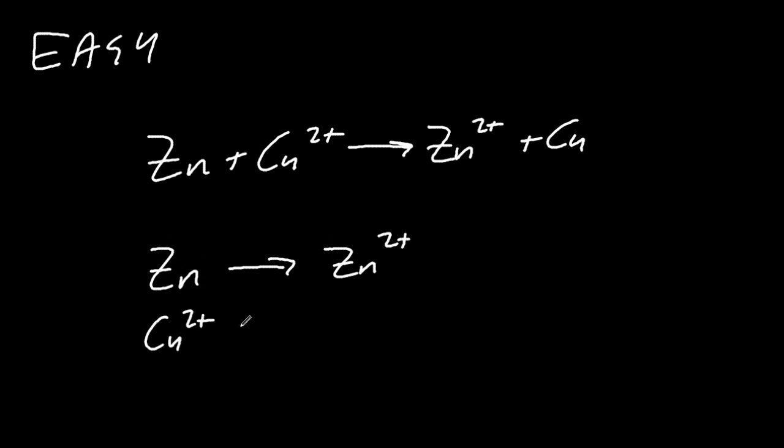So all you do is split it up into two obvious halves, and then make sure that the charges balance on each side. So by adding two electrons to each side, everything on each side now is neutral, it's balanced. To balance an equation, it's not just the atoms, it's also the charges you have to balance.